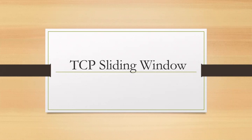Hello everybody, welcome to this video on TCP sliding window protocol. We know that in TCP, for managing flow control, we use the sliding window protocol with a dynamic window size. The TCP sliding window protocol uses different fields for acknowledgement of segments correctly received by the receiver. The acknowledgement contains the sequence number of the next byte expected. Let us look into the details of this.